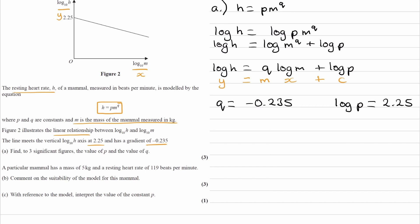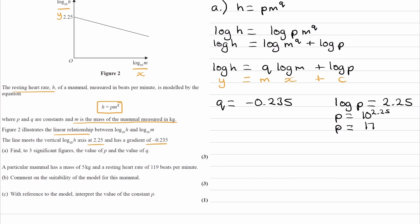P you can work out by doing 10 to the power of both sides. So p is 10 to the power of 2.25. And when you type that into your calculator, to 3 sig figs, you will end up with p being 178. We have p and q, and our equation will then be h is equal to 178 times the mass to the power of minus 0.235. And that is part a done.